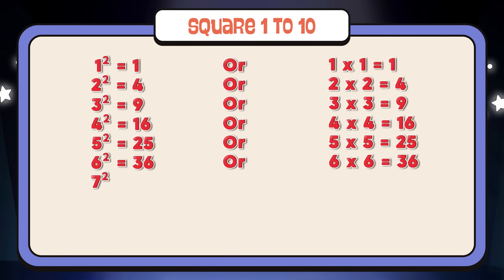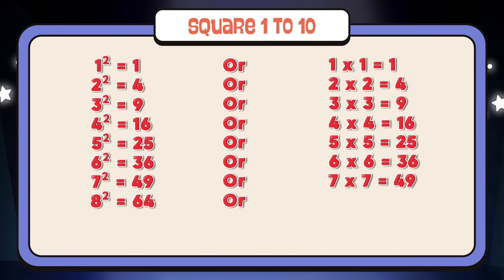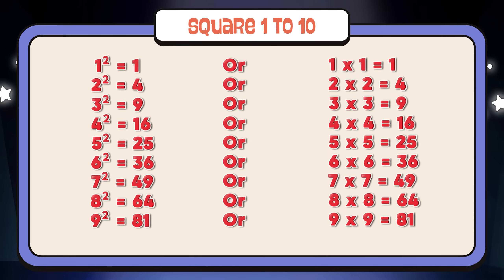7 square is equal to 49, or 7 times 7 is equal to 49. 8 square is equal to 64, or 8 times 8 is equal to 64. 9 square is equal to 81, or 9 times 9 is equal to 81. 10 square is equal to 100, or 10 times 10 is equal to 100.